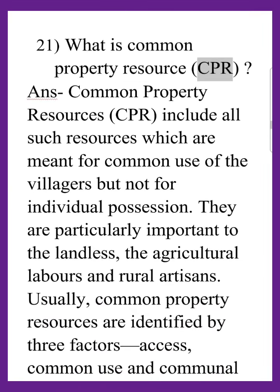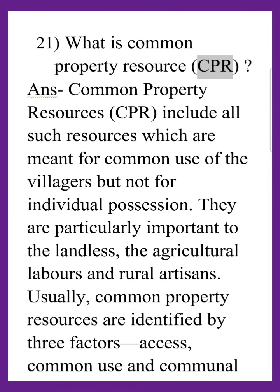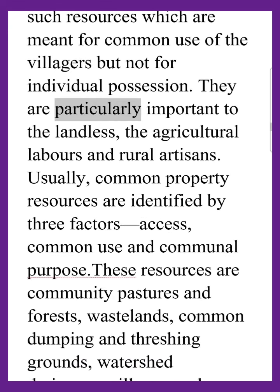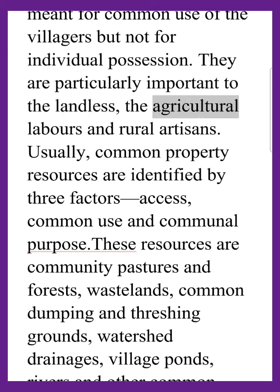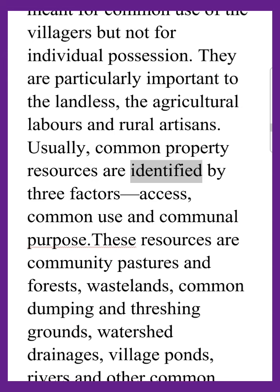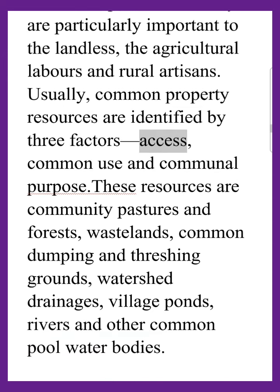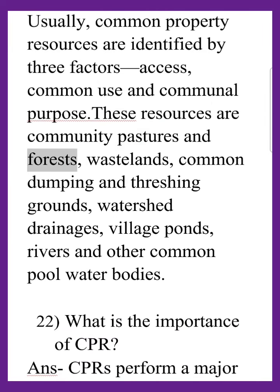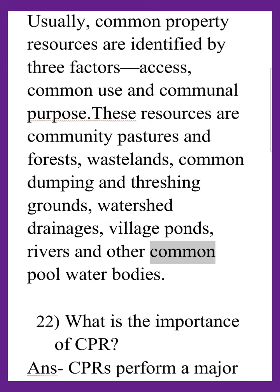What is Common Property Resource (CPR)? Common Property Resources (CPR) include all such resources which are meant for common use of the villagers but not for individual possession. They are particularly important to the landless, the agricultural laborers, and rural artisans. Usually, CPRs are identified by three factors: access, common use, and communal purpose. These resources include community pastures and forests, wastelands, common dumping and threshing grounds, watershed drainages, village ponds, rivers, and other common pool water bodies.